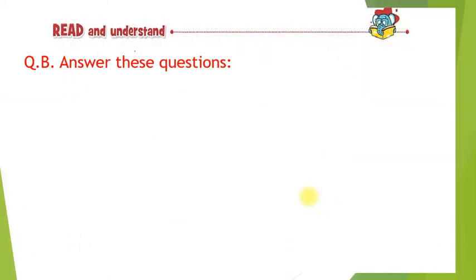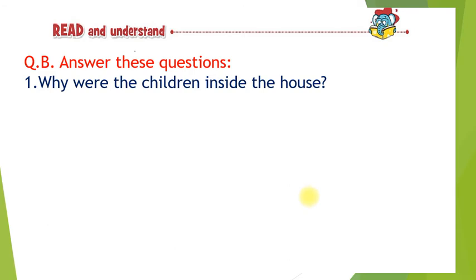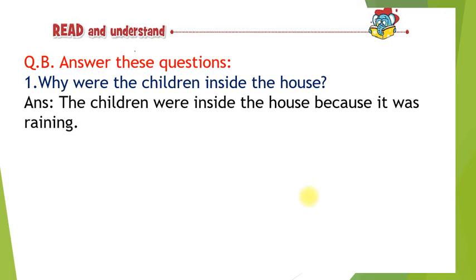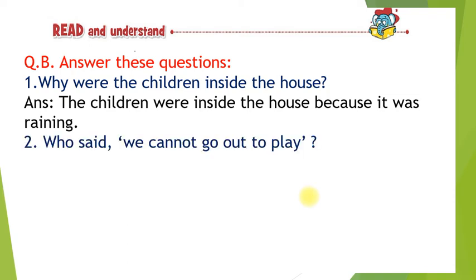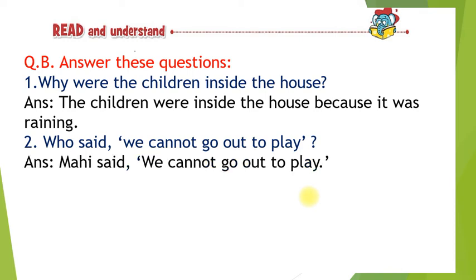Next question: answer these questions. First question: why were the children inside the house? Answer: the children were inside the house because it was raining. Question number 2: who said we cannot go out to play? Answer: Mahi said we cannot go out to play.